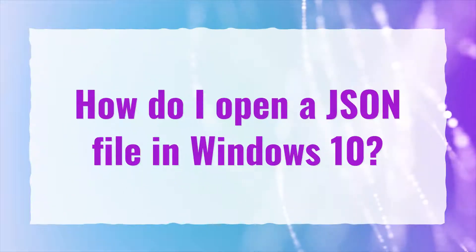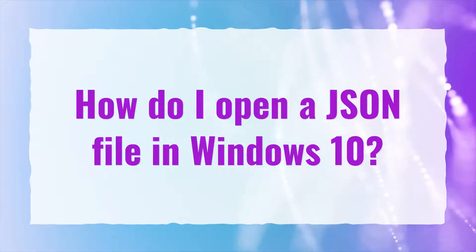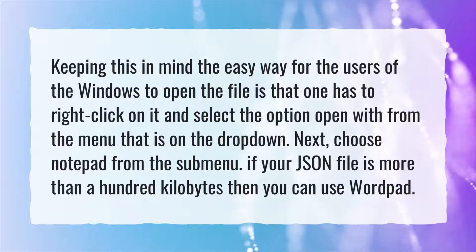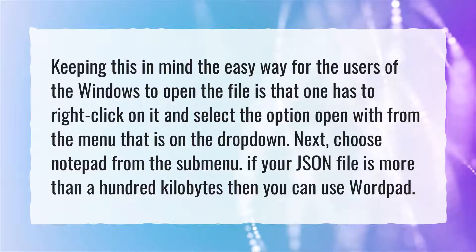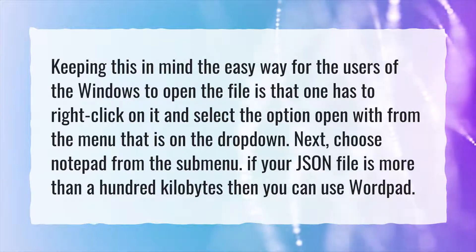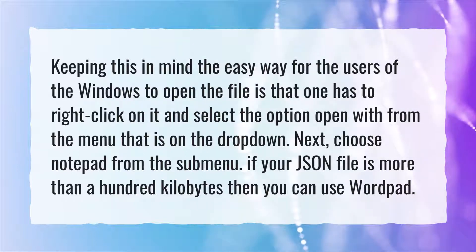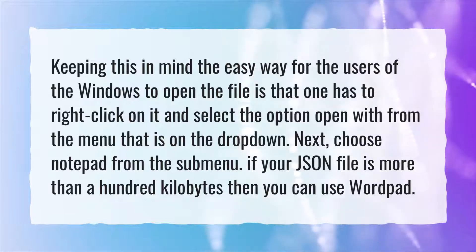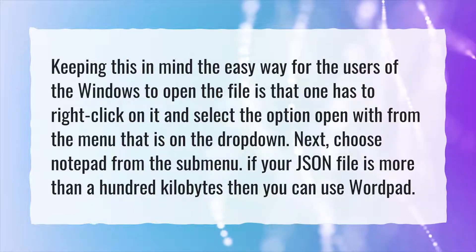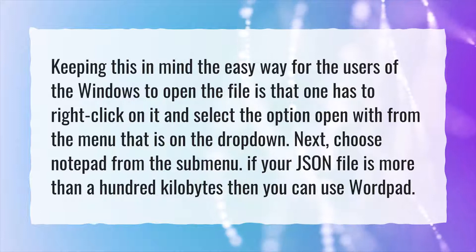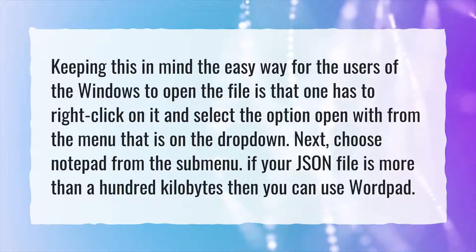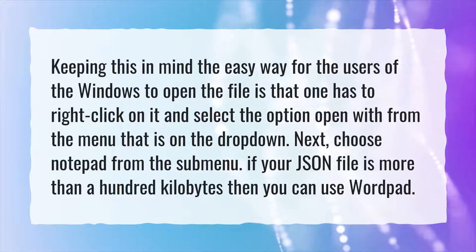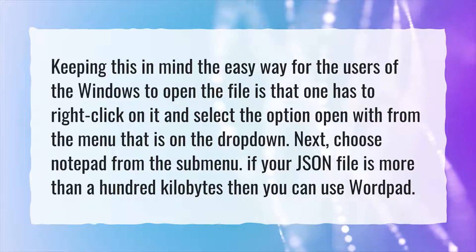How do I open a JSON file in Windows 10? The easy way for Windows users to open the file is to right-click on it and select the option Open With from the drop-down menu. Next, choose Notepad from the submenu. If your JSON file is more than 100KB, then you can use WordPad.